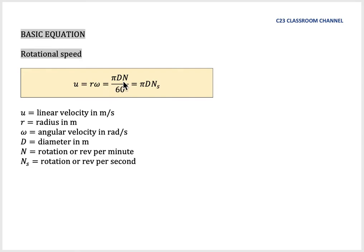And it is also equal to pi DN over 60, which is pi 22 over 7. D is the diameter in meter and N is the rotation or revolution per minute, RPM.